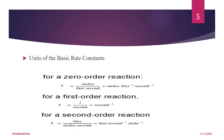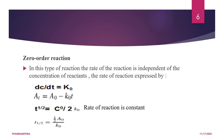For a zero-order reaction, the unit of the rate constant is moles per liter per second. For a first-order reaction, it is per minute or per second. For a second-order reaction, it is liter per mole per second. Now let us define what a zero-order reaction is.